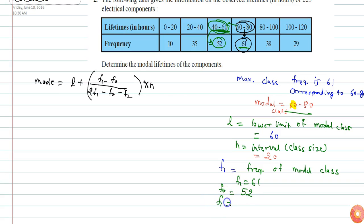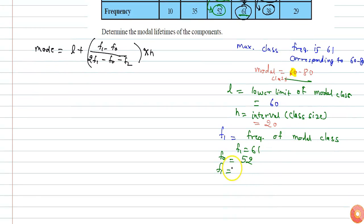And f2 is the class frequency of the class after the modal class. After the modal class, the class is 80 to 200 and its corresponding frequency is 38, so f2 will be 38. Now if I put all the values, L is 60 plus f1 is...